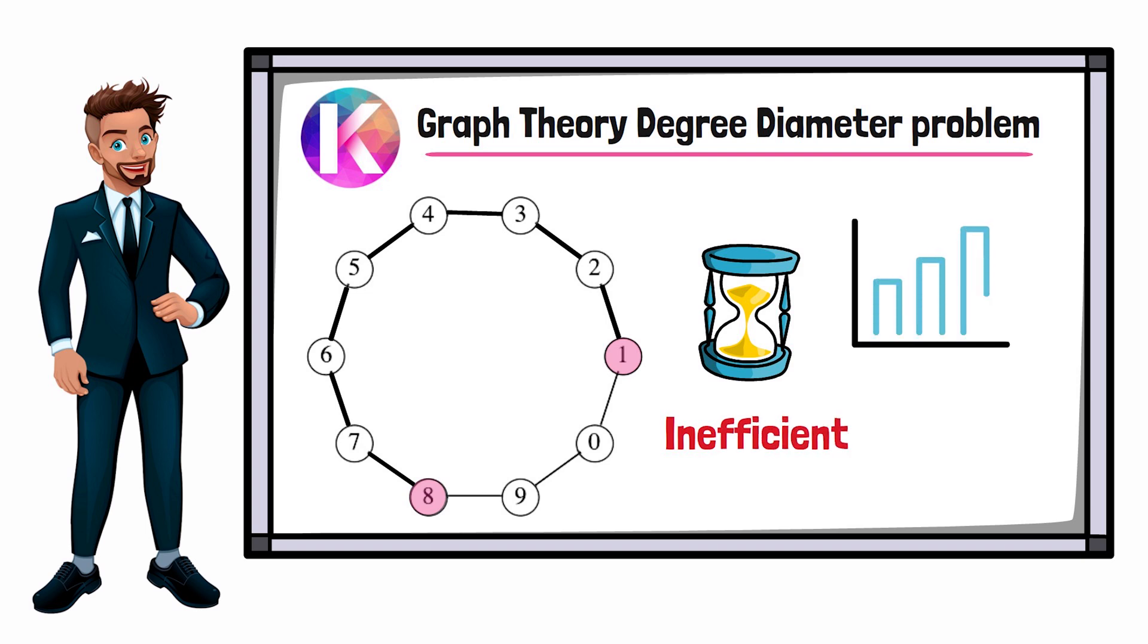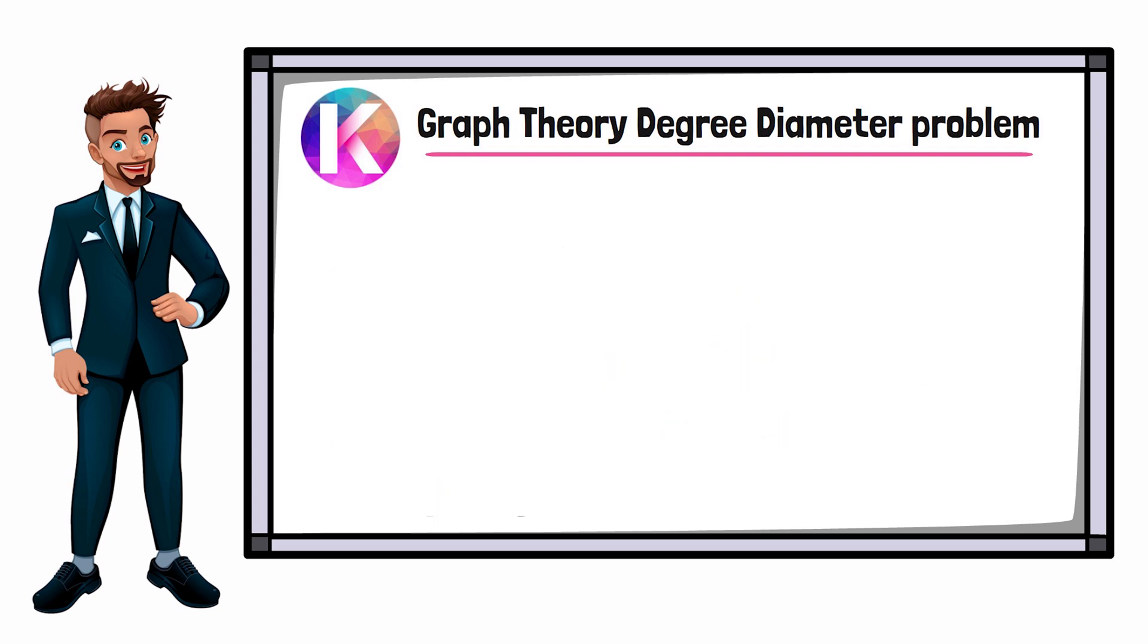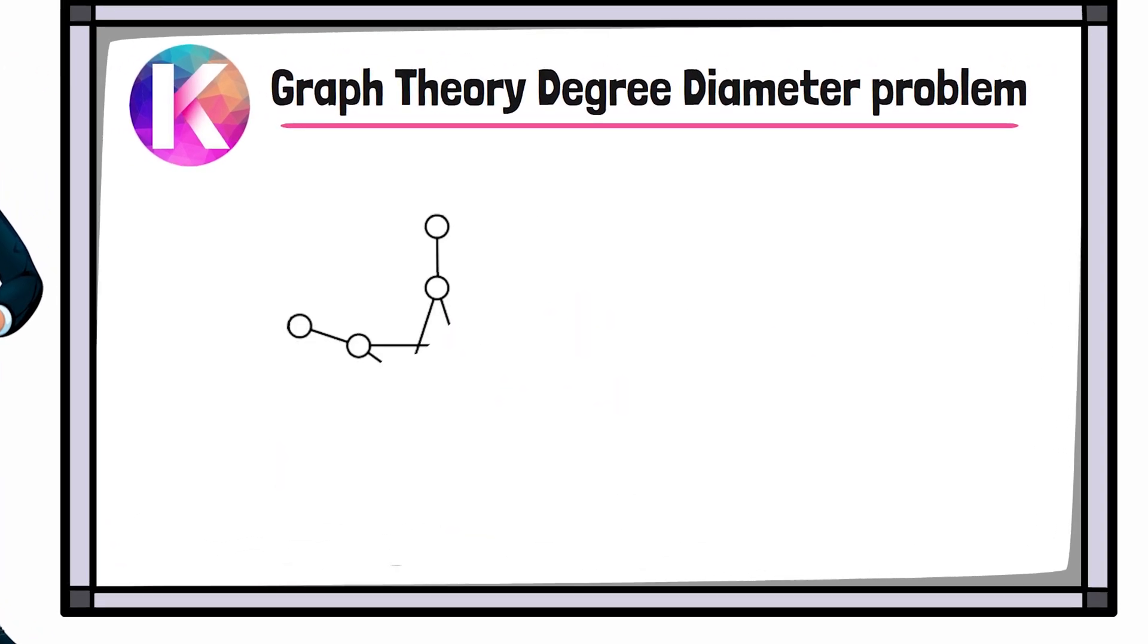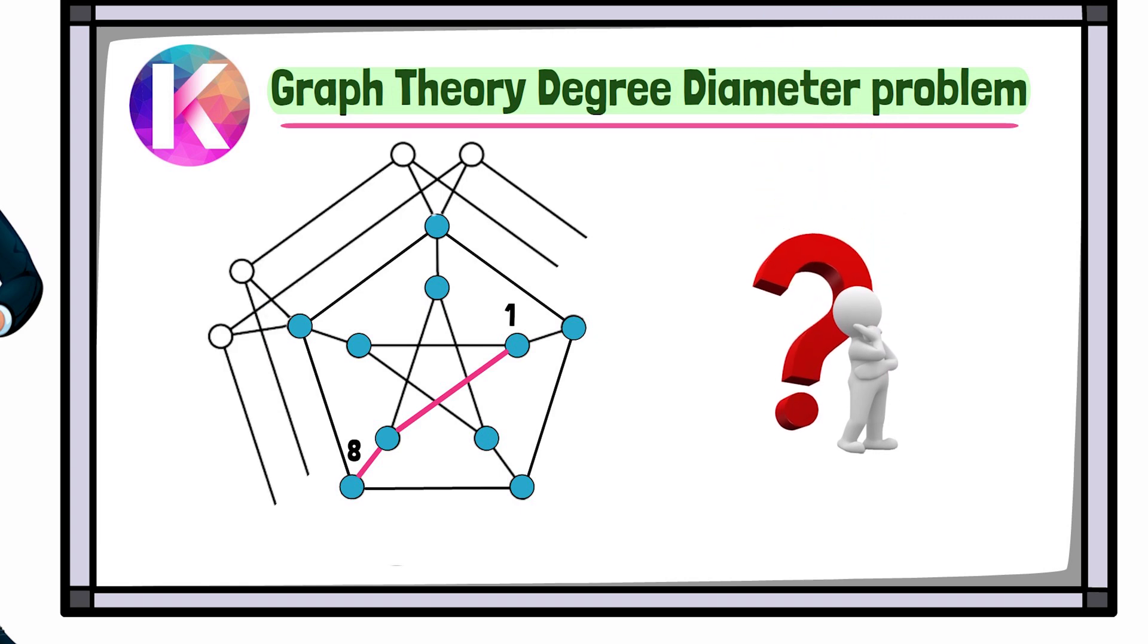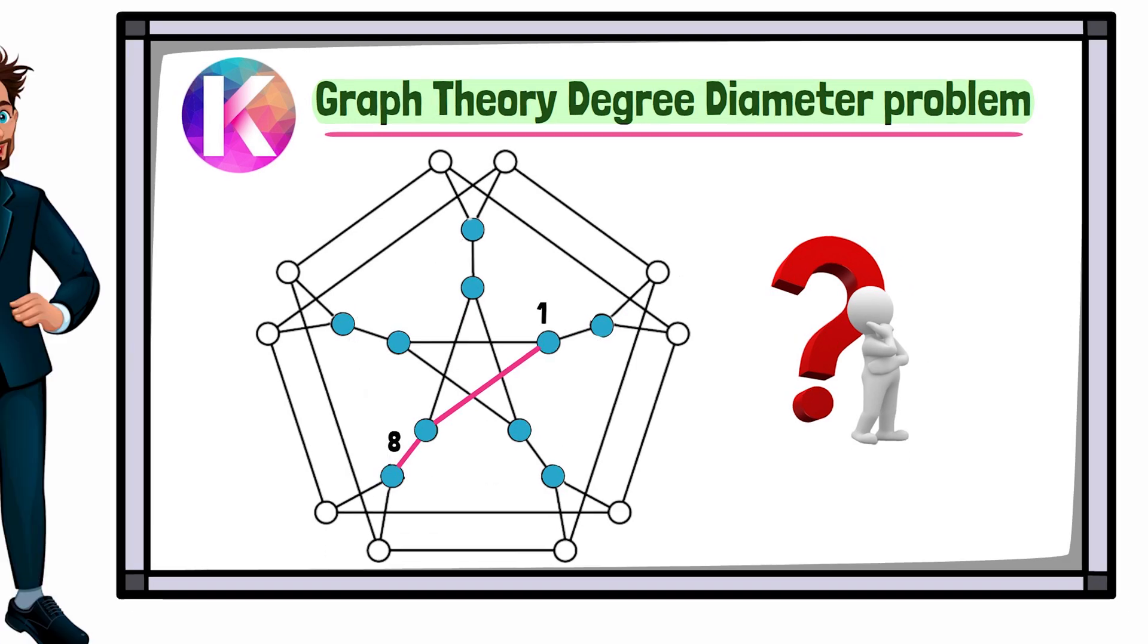And if you wanted to scale up to 20 chains, things would get even worse. What Will Martino figured out was that if they structured the blockchain using a specific formation - using the graph theory degree diameter problem - they could connect 10 blockchains and the farthest chain would be no farther away than three chains. And then guess what? They connected 20 chains and lo and behold, the farthest chain away was still only three moves away.